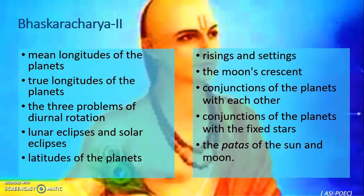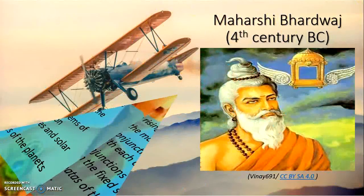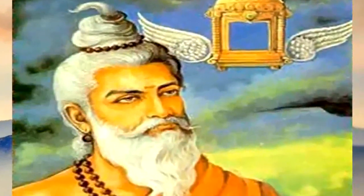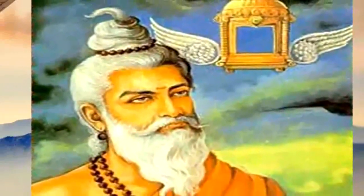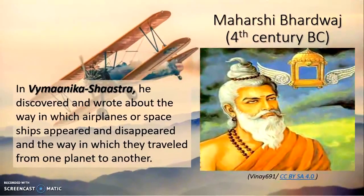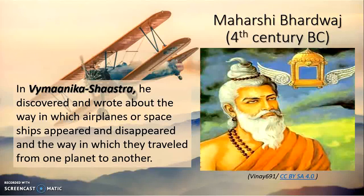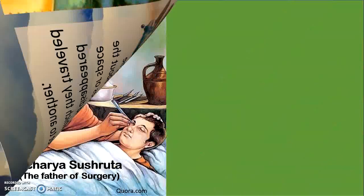Bhaskaracharya was a great thinker of his time — one of the greatest astronomers and physicists. He was not the only such name. You must have heard of Maharishi Bharadwaj, who was around the 4th century BC. In his book Vimana Shastra, he discovered and wrote about the way in which airplanes or spaceships appeared and disappeared and the way in which they traveled from one planet to another.